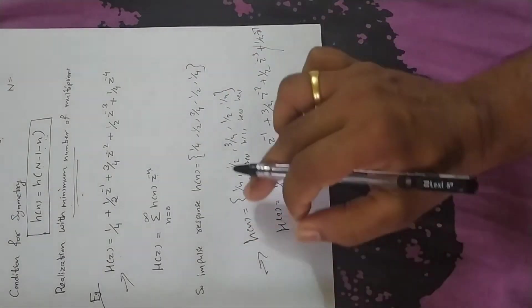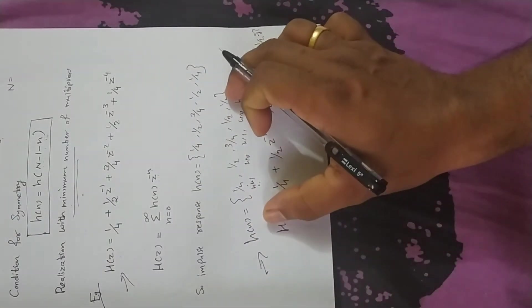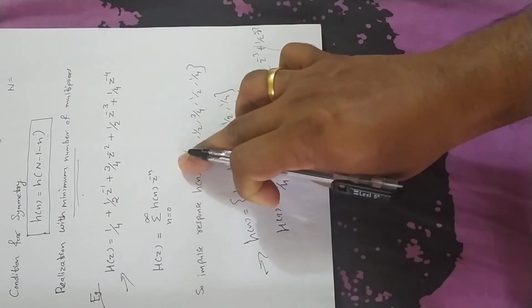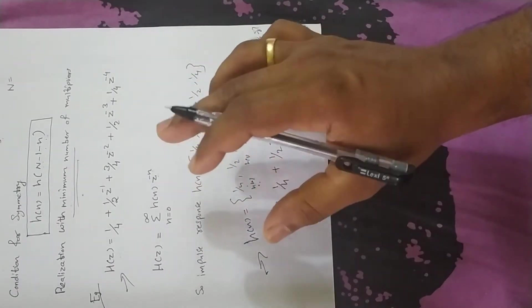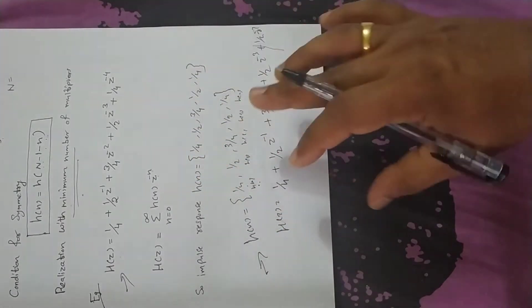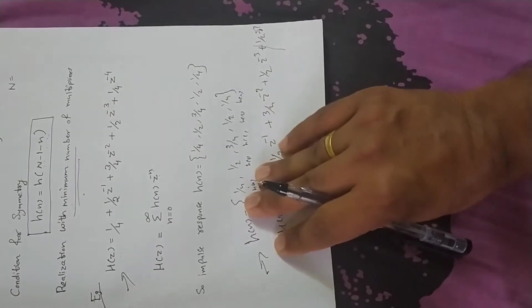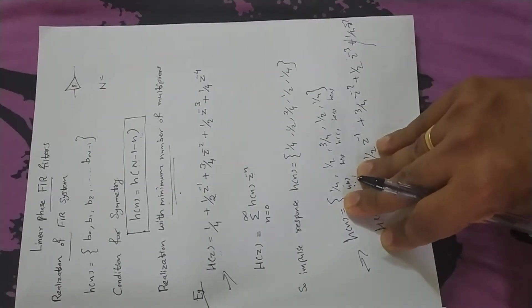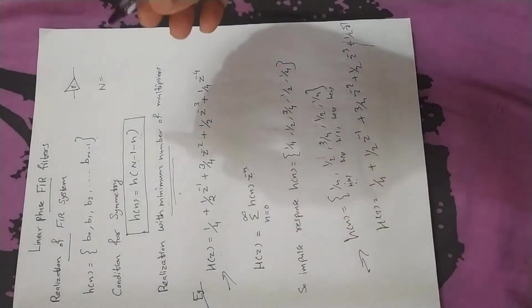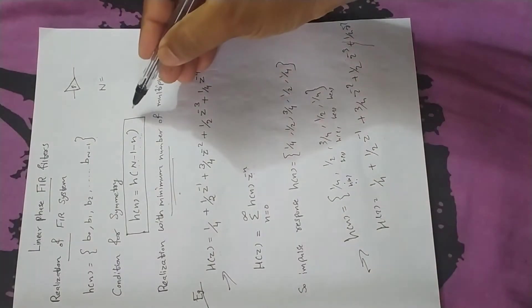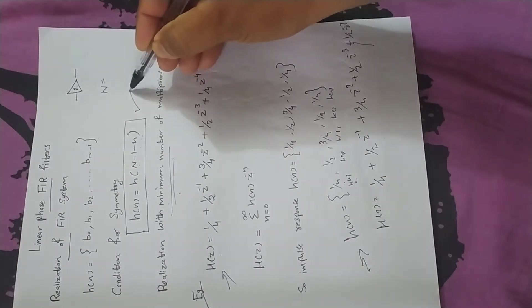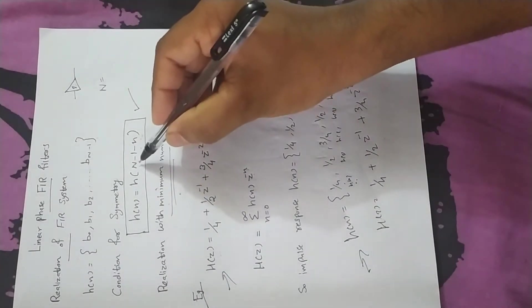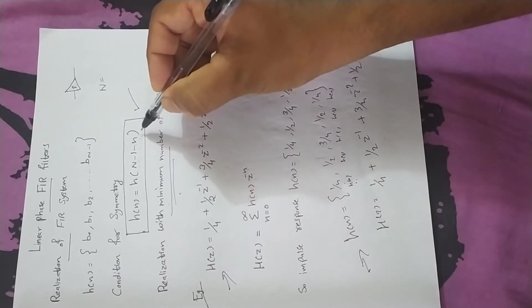h(n) is h(0). The h(n) equation is h(n) = h(N-1-n).